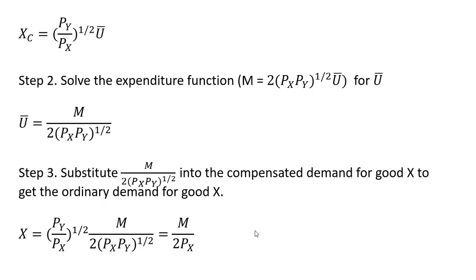If we wanted to get our ordinary demand for good y, we would do a similar thing: take the partial derivative of the expenditure function with respect to the price of good y to get the compensated demand for good y, then make a substitution like we just did to get the ordinary demand for good y. I hope you found this video helpful. Thank you very much.